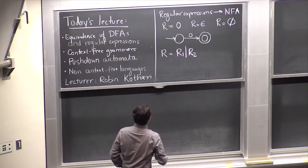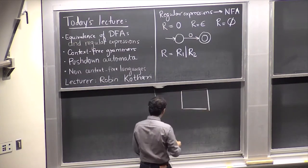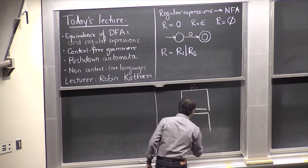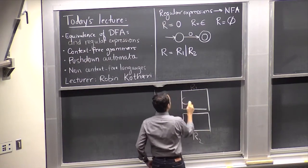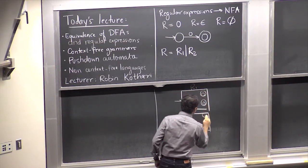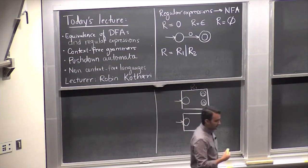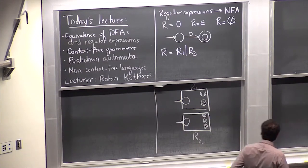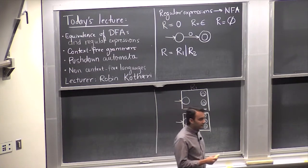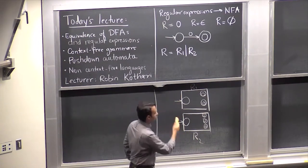Let's say this is an NFA for R1, and this is an NFA for R2. It has some start state and a bunch of accepting states — maybe this one has three accepting states, maybe that one has two. What I want to do is construct one NFA that accepts the union of these two languages. How would we construct one NFA using these two NFAs that accepts either strings in R1 or strings in R2?